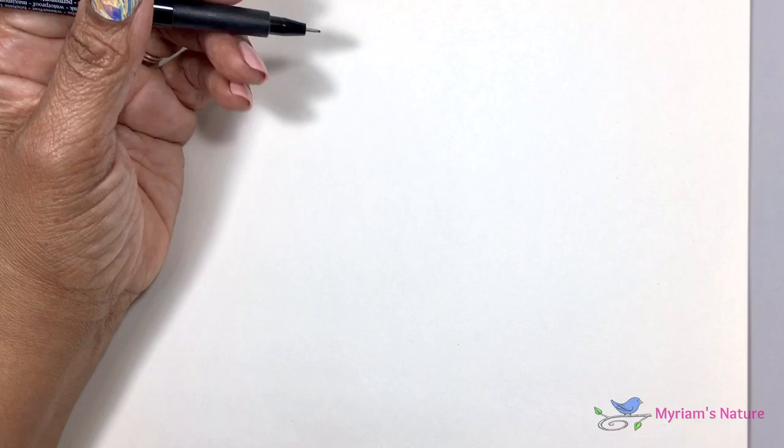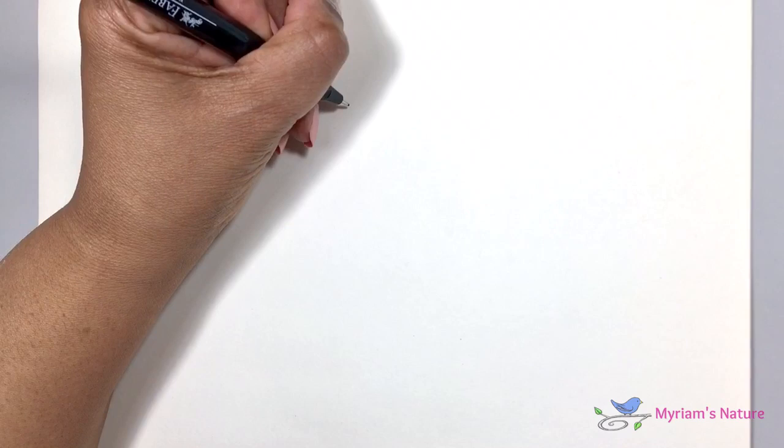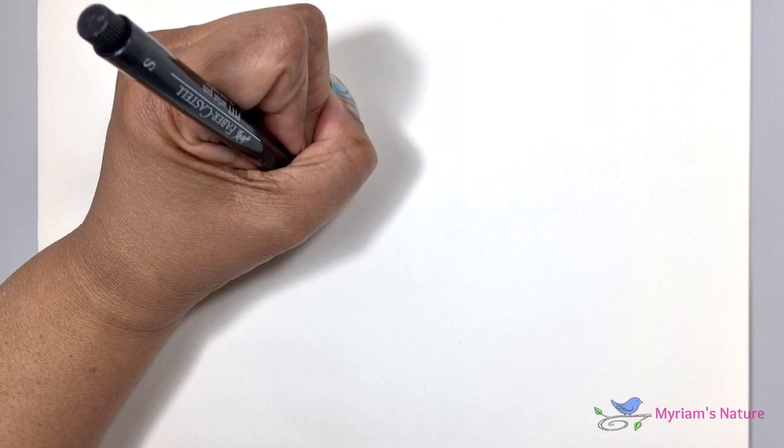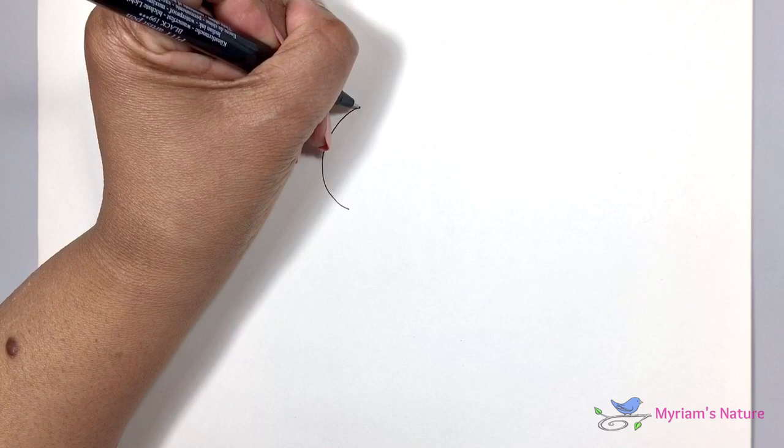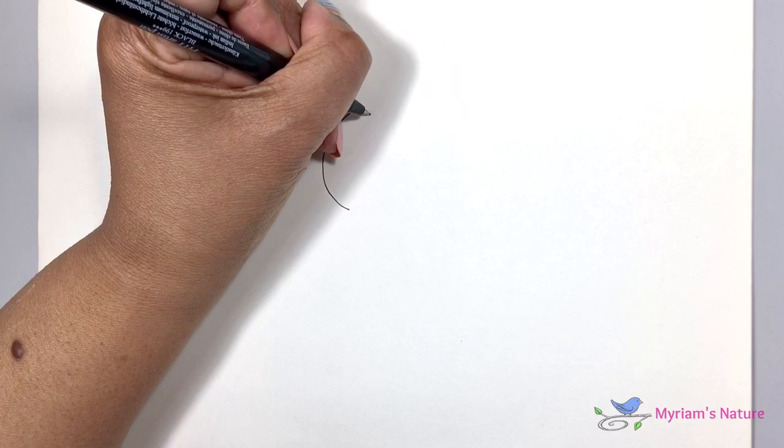So to begin, I'm going to just draw sort of a soft C. Just something along these lines. And then I'm going to draw one in the other direction, beginning at the same spot that I started the first one, and ending at the same spot.